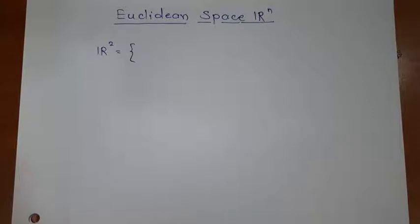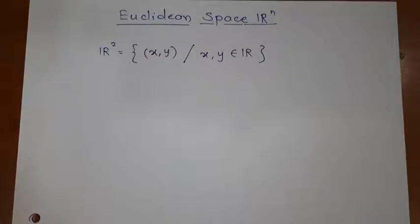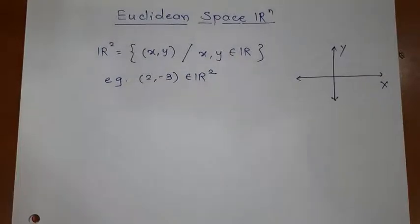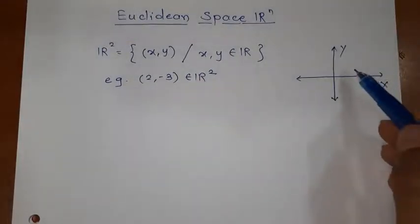As you know in R^2, we have an ordered pair (x, y) where x and y both are real numbers. For example, (2, -3) is an element of R^2. When we draw the diagram, we have x-axis and y-axis and we can plot any point here.